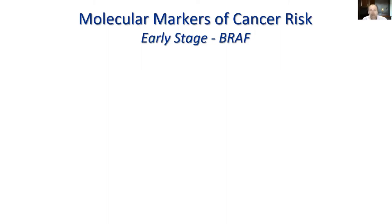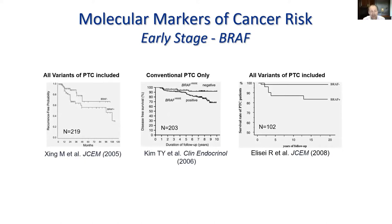This whole era of using molecular markers for cancer risk assessment started around 2004-2005, after the discovery of the BRAF V600E mutation as a main genetic event in papillary thyroid carcinomas. First publications around 2005-2007 were showing that the presence of BRAF mutation has pretty good correlation with either rate of recurrence or even mortality from thyroid cancer. This is an example of several studies showing Kaplan-Meier curves for BRAF-negative and BRAF-positive tumors from multiple continents and multiple groups.